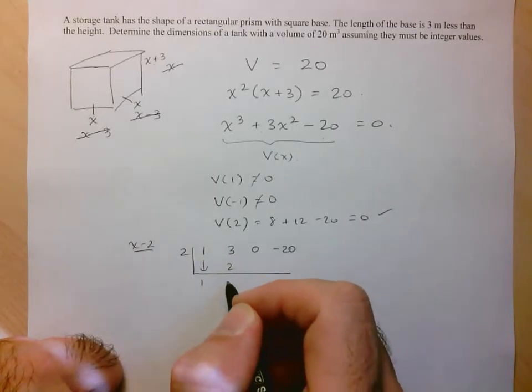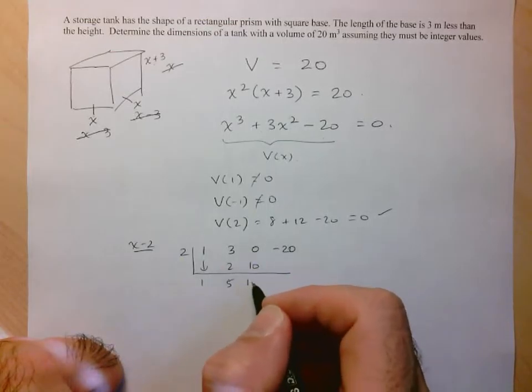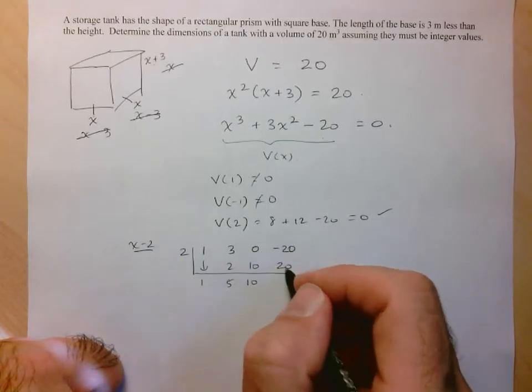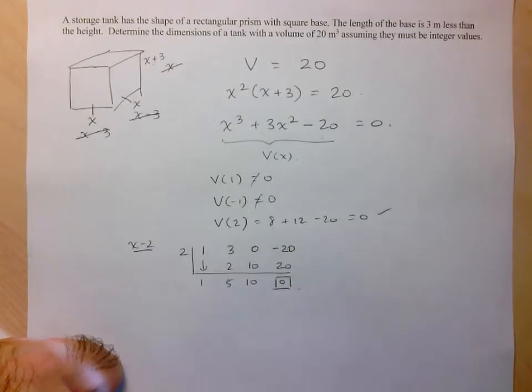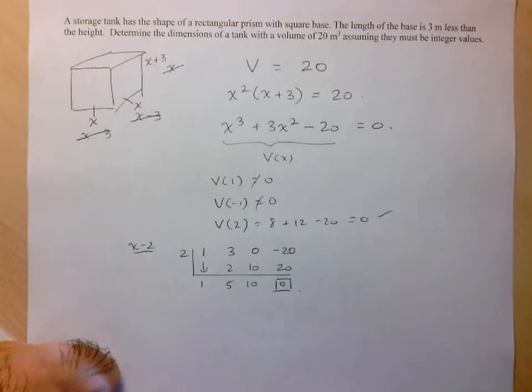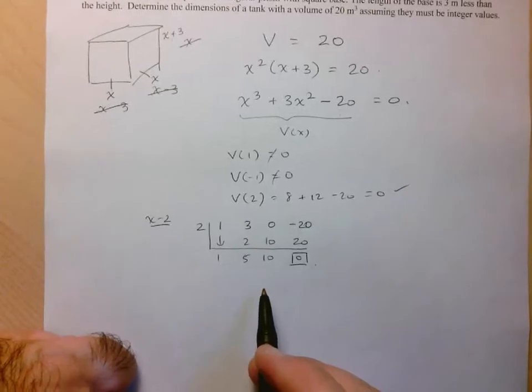So we go through our process. 1, that gives us 2, 3 plus 2 is 5, 2 times 5 is 10, add them up, 10, 2 times 10 is 20, and of course when we add up the last ones, we expect to get 0 as a remainder, so that proves that x minus 2 was indeed a factor.